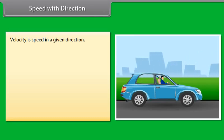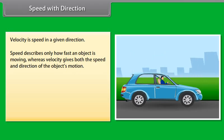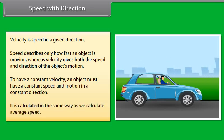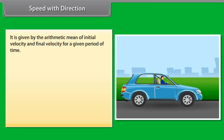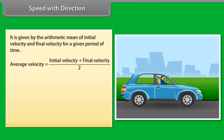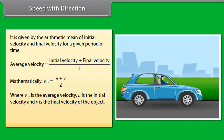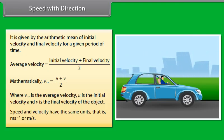Speed with direction: Velocity is speed in a given direction. Speed describes only how fast an object is moving, whereas velocity gives both the speed and direction of the object's motion. To have a constant velocity, an object must have a constant speed and motion in a constant direction. Average velocity is calculated the same way as average speed: it is given by the arithmetic mean of initial velocity and final velocity — that is, average velocity = (U + V) / 2, where VAV is the average velocity, U is the initial velocity, and V is the final velocity. Speed and velocity have the same units: meters per second.